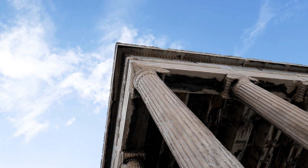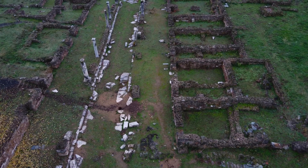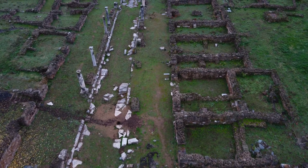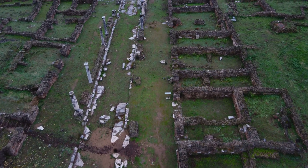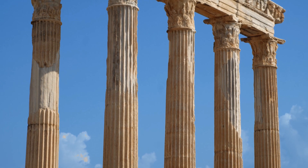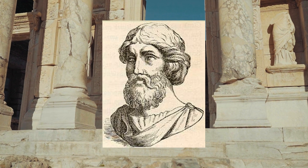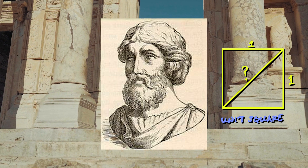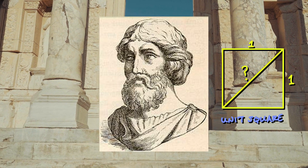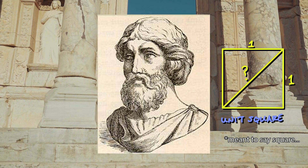There are apocryphal stories that the first person to discover an irrational number was put to death by the Pythagoreans, because he violated their religious belief that everything can be expressed as an integer or ratio of integers. Hippasus of Metapontum was trying to answer the simplest question after discovering the Pythagorean theorem: what is the length of the diagonal of a unit square? It turns out the square root of two was the right answer mathematically, but the wrong answer for Hippasus.